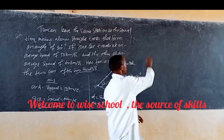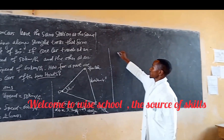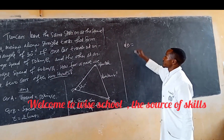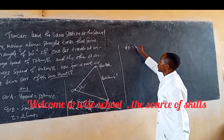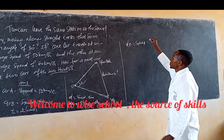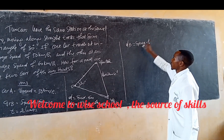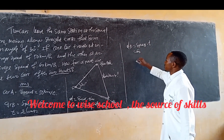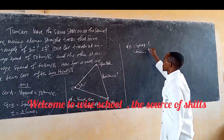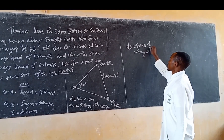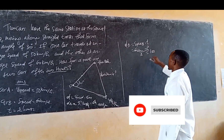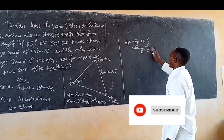So what is the distance from B? The distance equals the speed of B times the time, which is equal to 60 kilometers per hour times the time, giving a result equal to 90 kilometers.